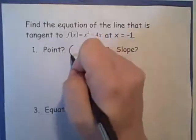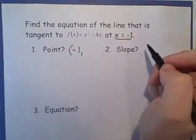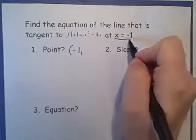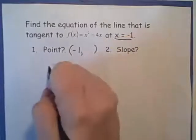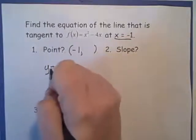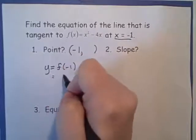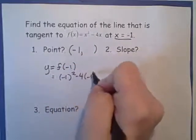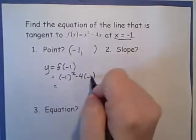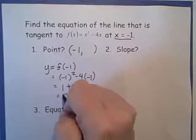We know that the x value of the point is negative 1, but we don't know what the y value is. The y is going to be our function at negative 1. So I have negative 1 squared minus 4 times negative 1. That's 1 plus 4, which is 5.